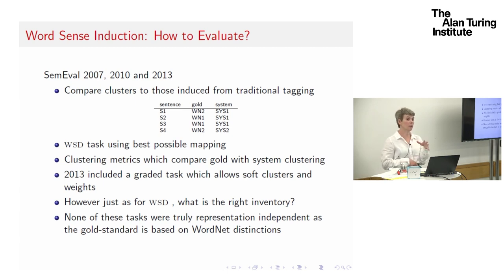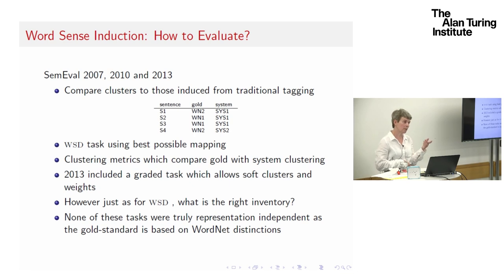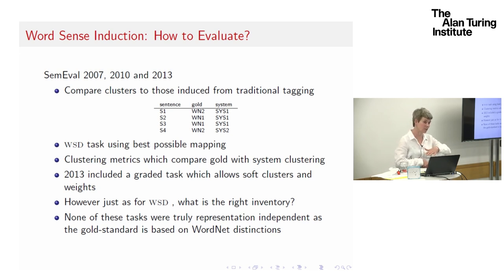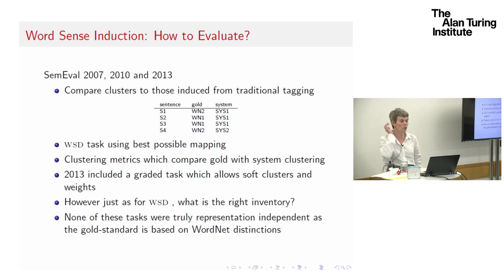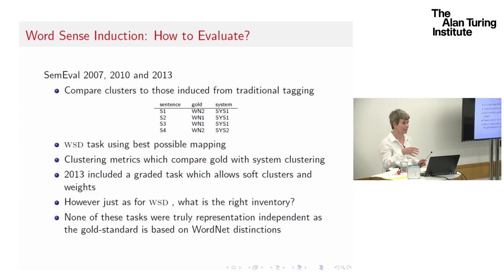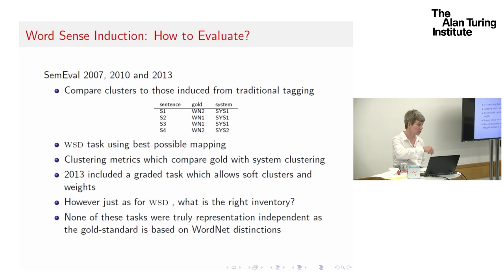So we've got lots of different ways of inducing meaning — how do we evaluate it? In SemEval, because clustering is very hard to evaluate, rather than just getting people to cluster sentences directly, the approach has been to get humans to label the data with WordNet senses, then induce a human clustering from those and use it for comparison. My point is not that it's wrong — it's been a good way of comparing different types of representation — but these evaluations are still fairly dependent on the WordNet representation of sense. There has been a graded task I really liked that allows soft clusters, where a sentence could belong to more than one sense.